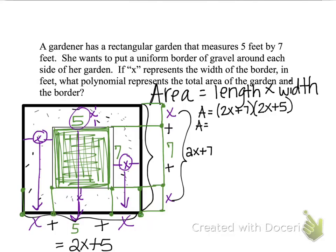So we said the length was 2X plus 7 and the width was 2X plus 5. So let's do a little simplifying here and do some FOIL.